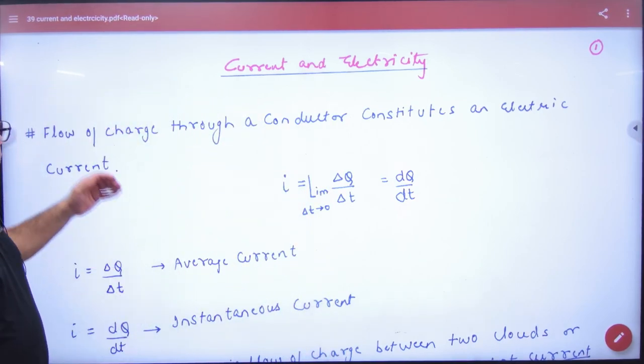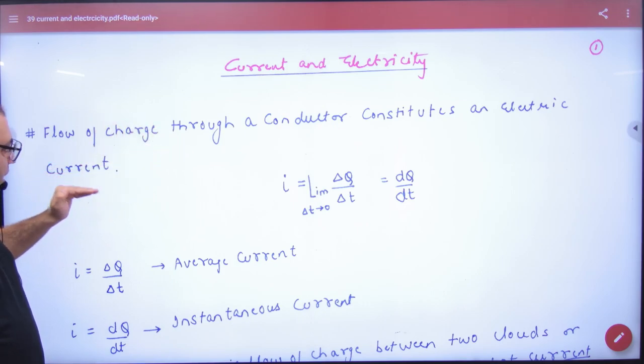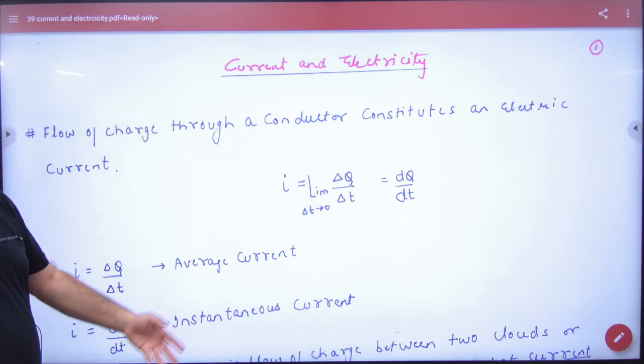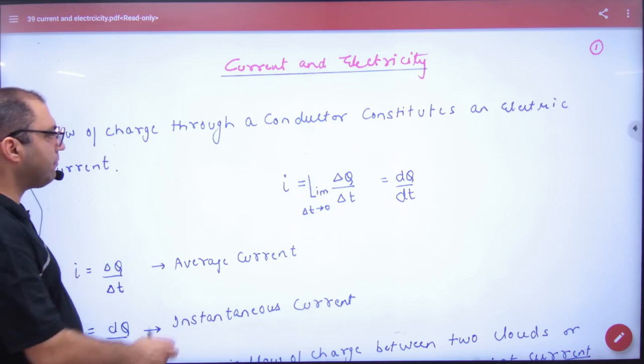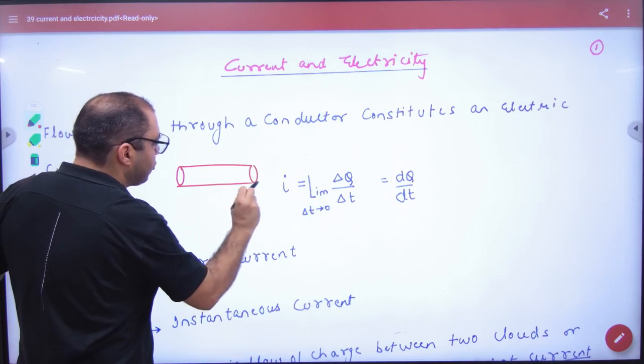Electricity. So flow of charge through a conductor constitutes an electric current. Okay, in a conductor flow of charge creates electric current. So let us suppose you have a wire, one wire, you have a potential difference applied.